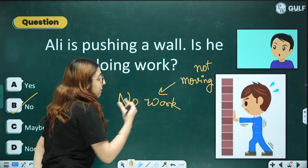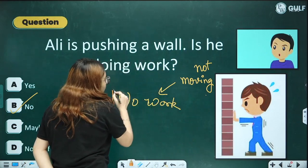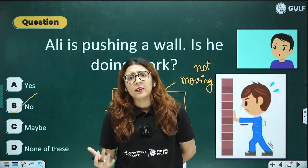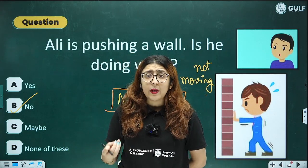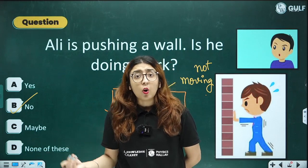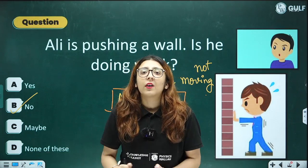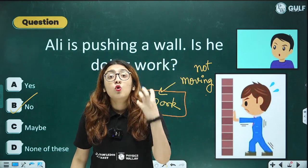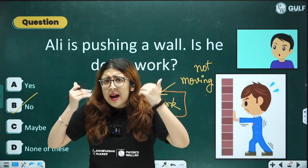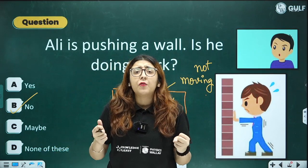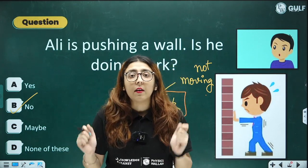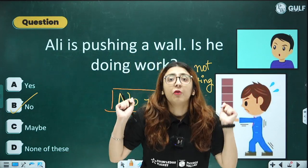The correct answer is: no, Ali is not doing any work, because for work done there should be some movement and displacement. Similarly, a boy sitting on a chair studying for 3 or 4 hours — is he doing any work? No work is done, because there is no displacement, no distance covered in a particular direction.